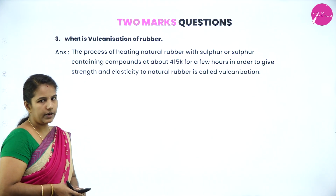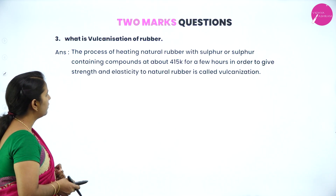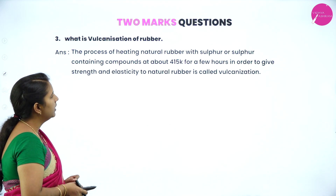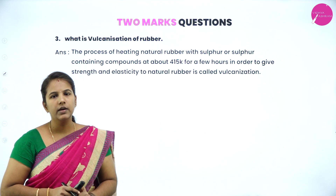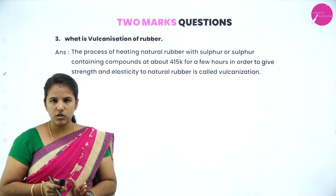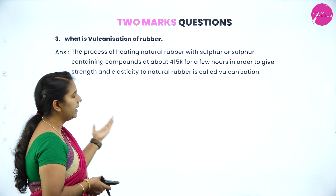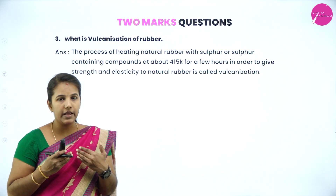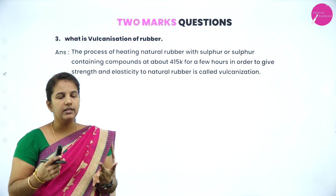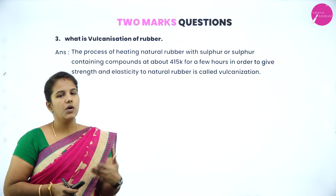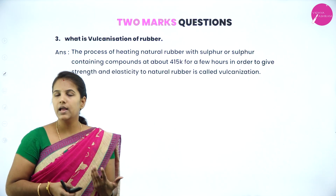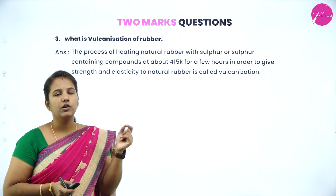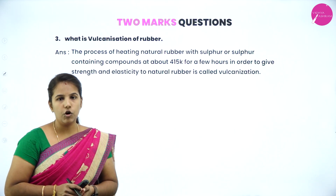What is vulcanization of rubber? Vulcanization is the process of heating natural rubber with sulfur or a sulfur-containing compound at about 415 K for a few hours in order to give strength and elasticity to the rubber. During vulcanization, sulfur atoms are incorporated into the natural rubber, increasing its strength and elastic nature. For a 2-mark answer, you must write the definition in words and also draw the structure of natural rubber showing how sulfur atoms are added to give vulcanized rubber.